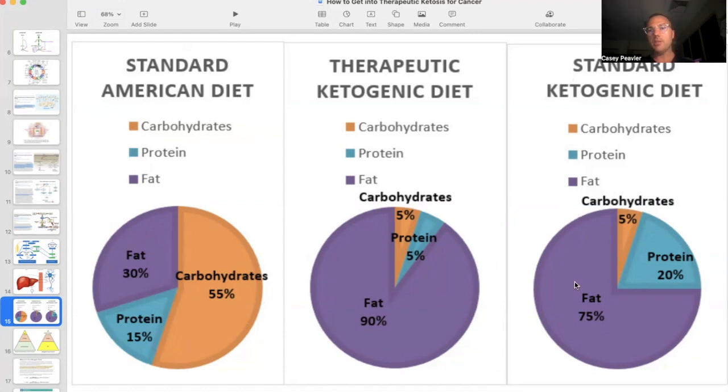A standard ketogenic diet is 75% fat, 20% protein, and 5% carbohydrates. Whereas a therapeutic ketogenic diet is about 5% carbohydrates, 5% protein, and 90% fat.